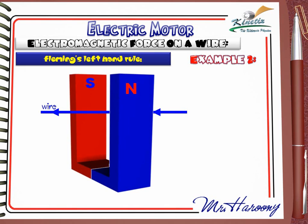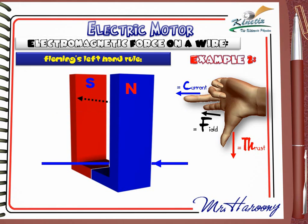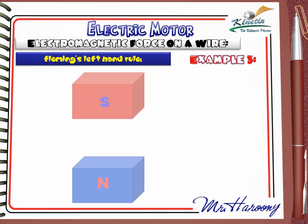Example 2: This is the magnet and this is the wire. The dotted black arrow indicates the magnetic field direction from north to south. Applying Fleming's Left Hand Rule: the first finger points with the magnetic field into the page, and the second finger gives the current direction from right to left. The rule shows that the wire will be pushed downwards, as shown by the thumb.